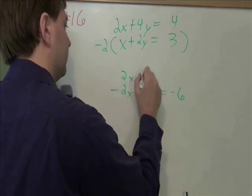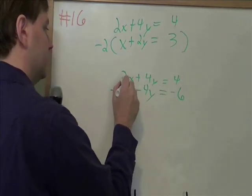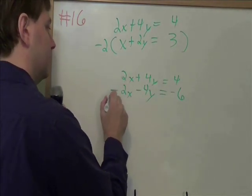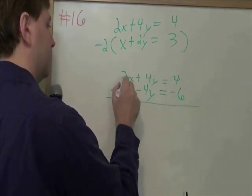And let me just rewrite this top line. Now I can see that 2x and minus 2x are opposites. So I'm going to add the entire equations together, and the x's will cancel out.